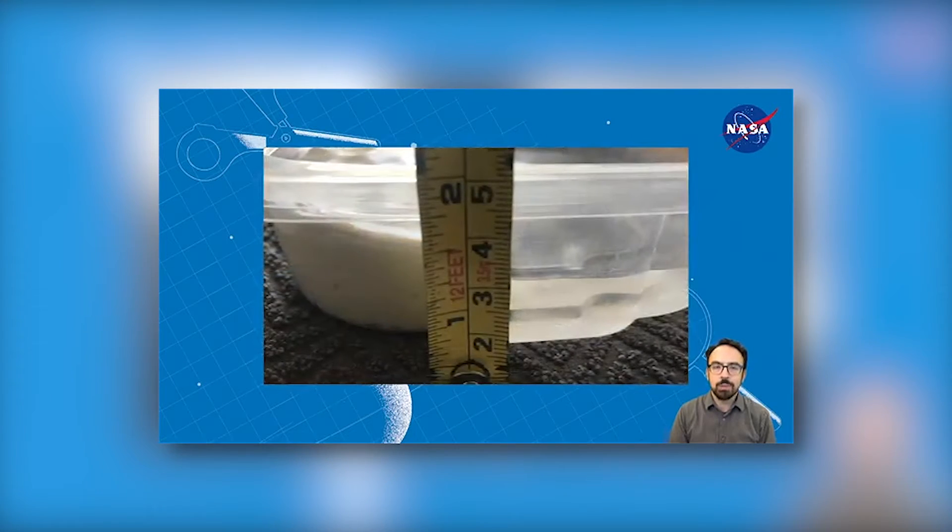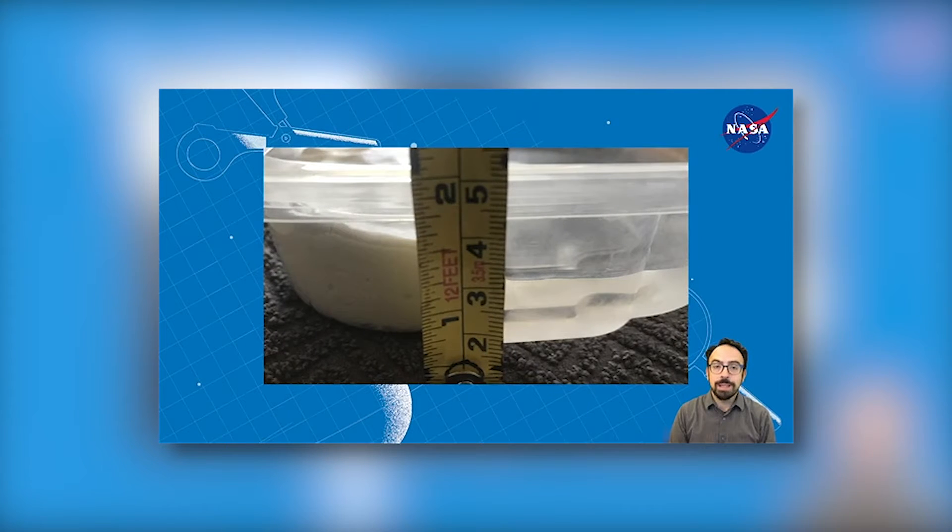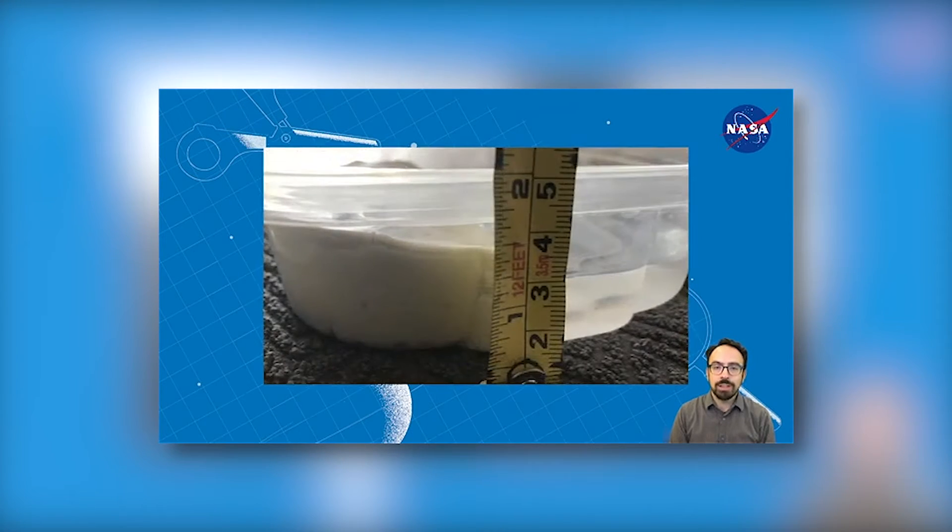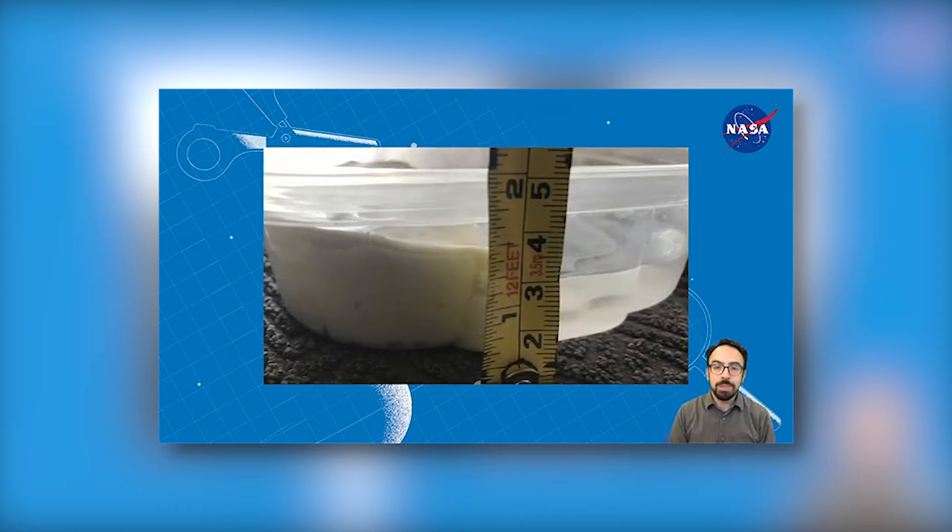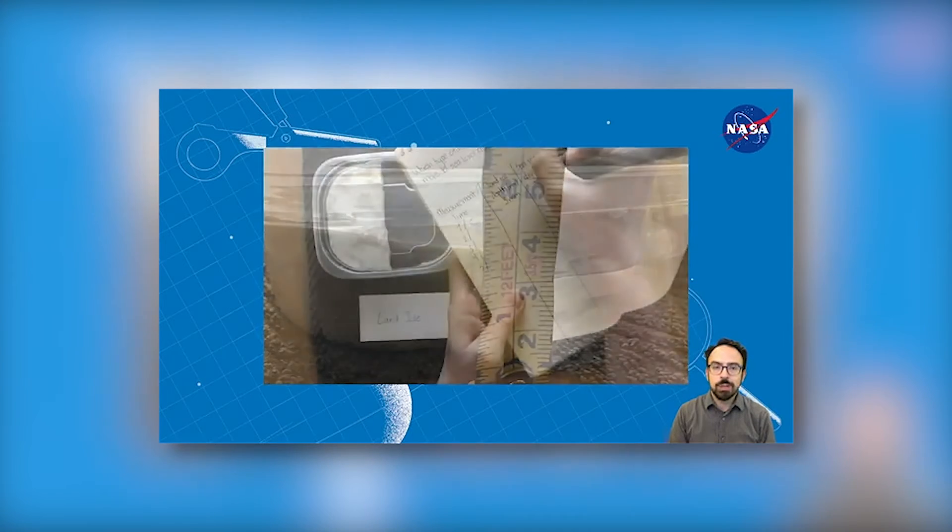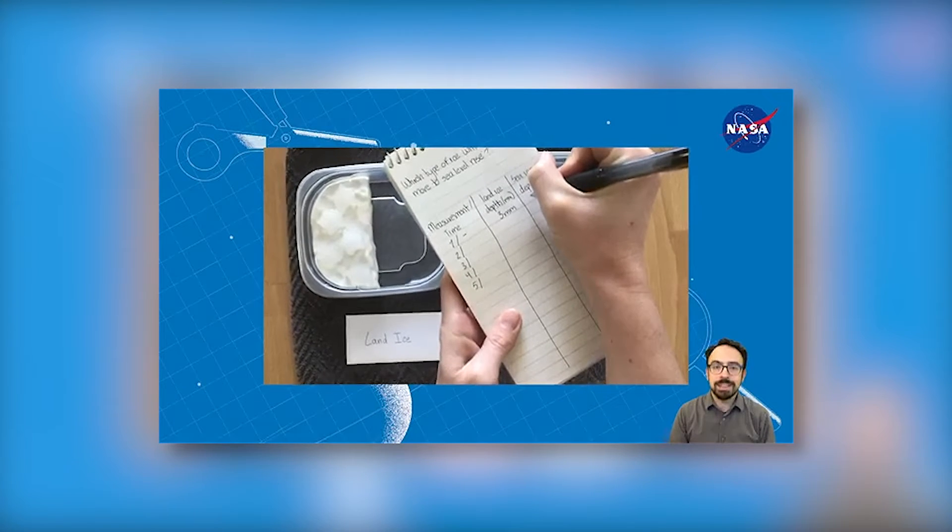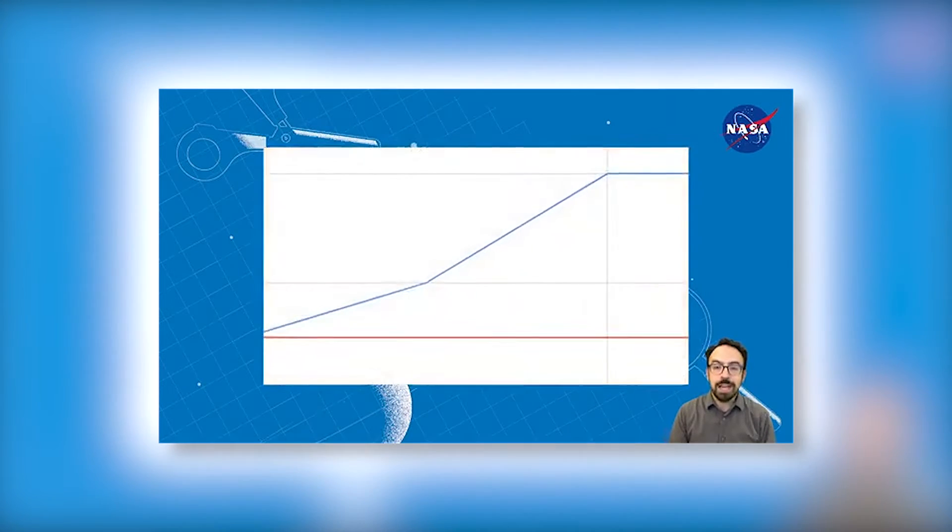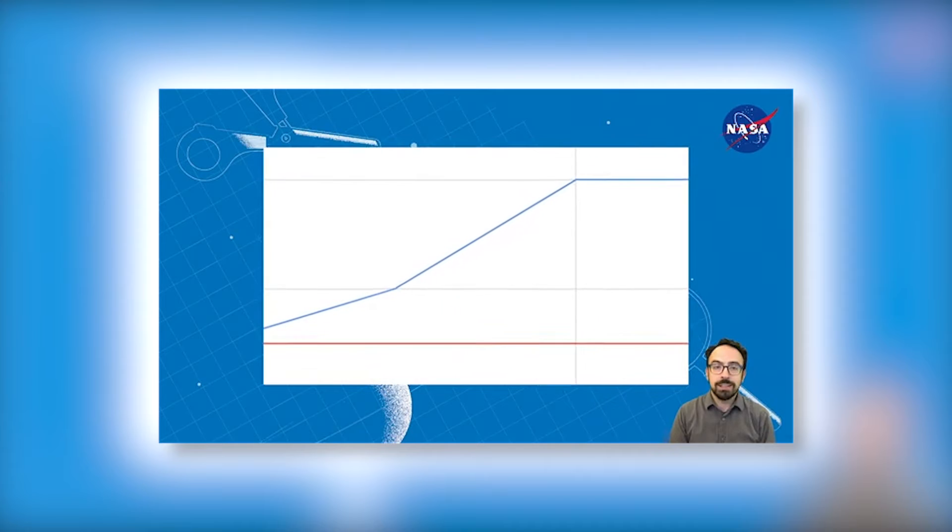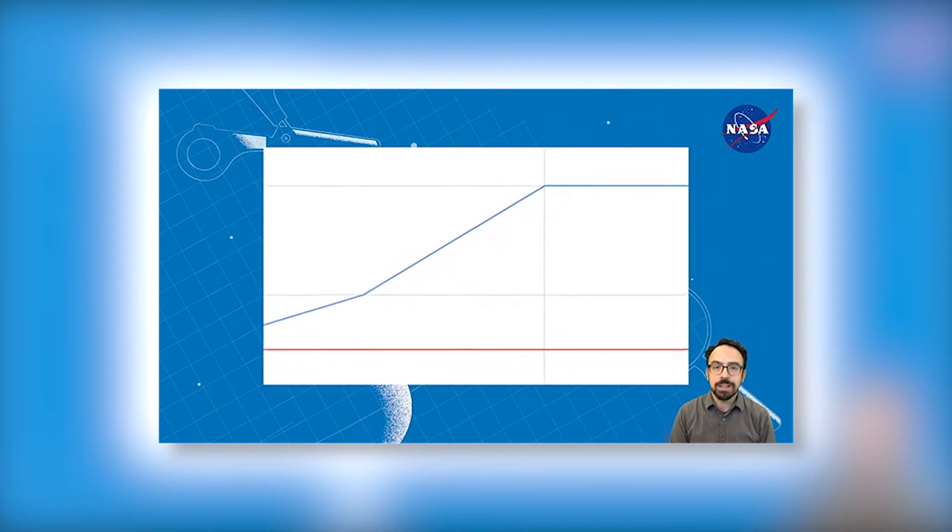Now it's time to be patient while the ice melts. While it's melting, make regular measurements of the water level in each container, maybe every minute if the ice is melting quickly, or every five minutes if it's melting slowly. Keep recording measurements until the ice is melted in each container. For an added challenge, graph your data, either on paper or using spreadsheet software.